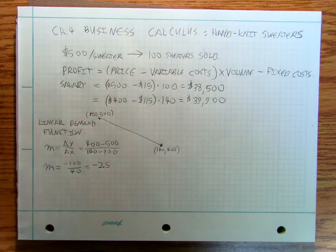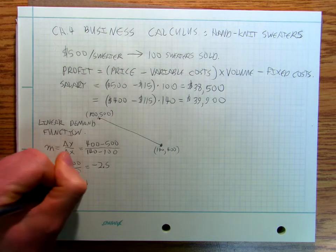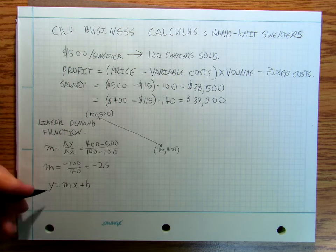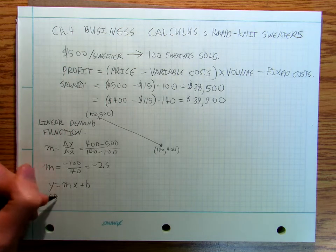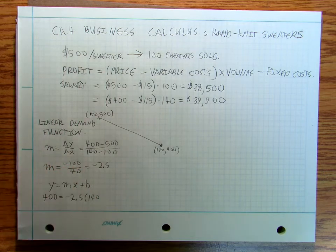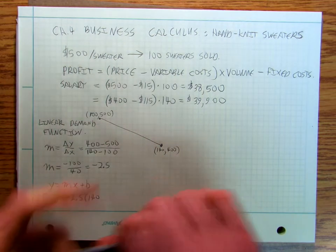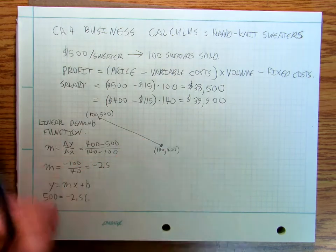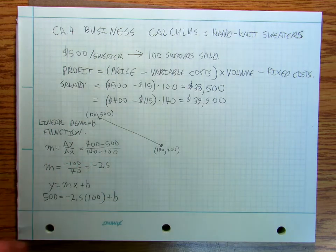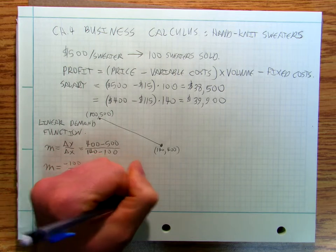So I get my M is equal to negative 100 over 40, and so my M is negative 2.5. And then I say Y equals MX plus B, and I say that 400 equals negative 2.5 times 140 plus B. That's 250, that's 750, so my B is equal to 750.